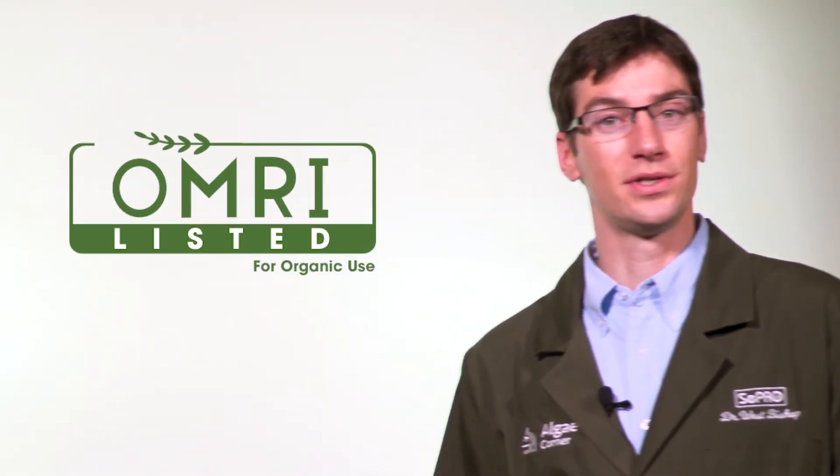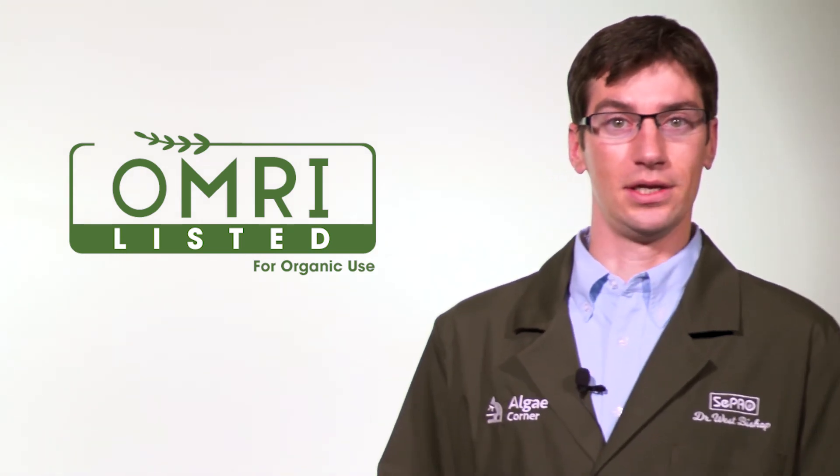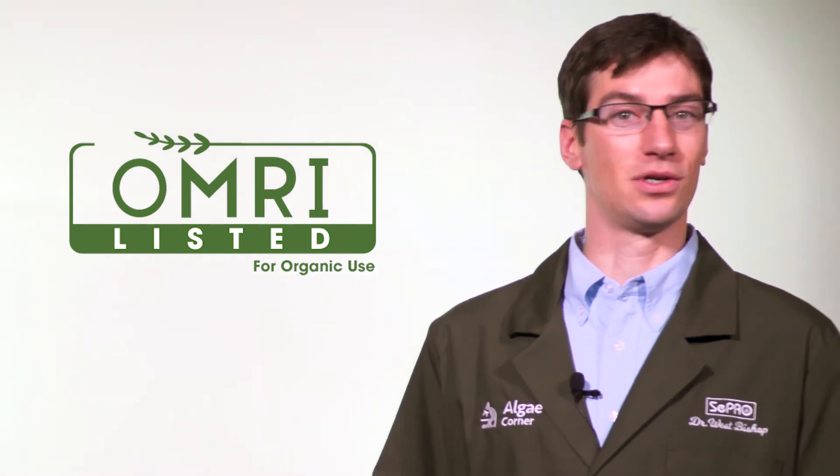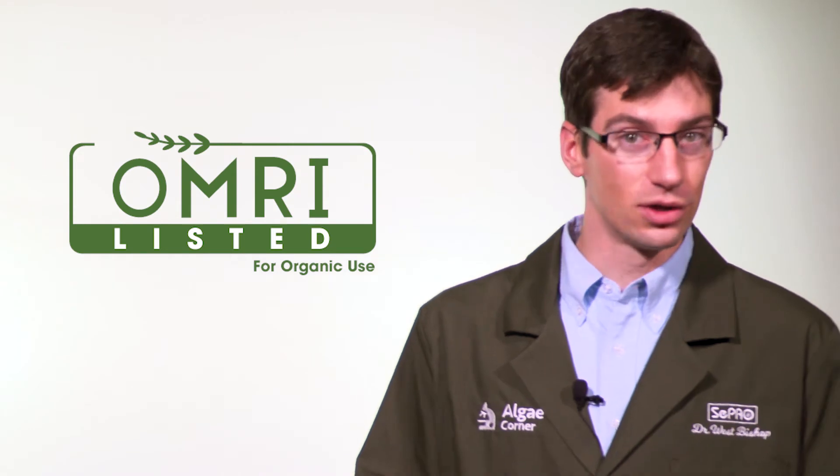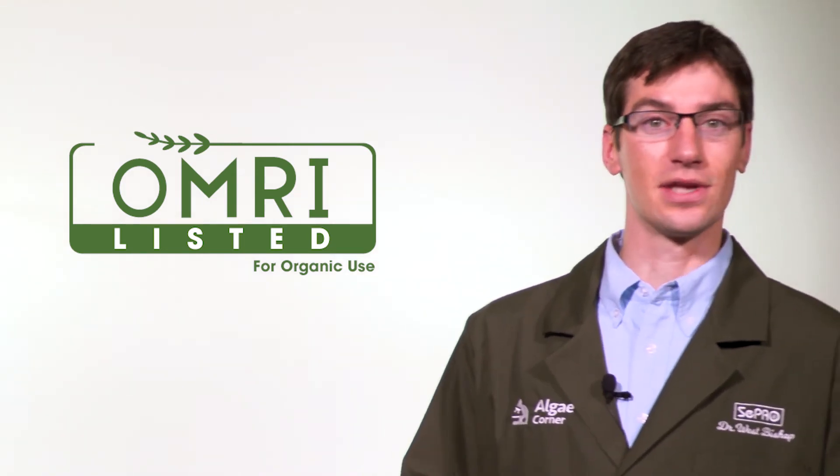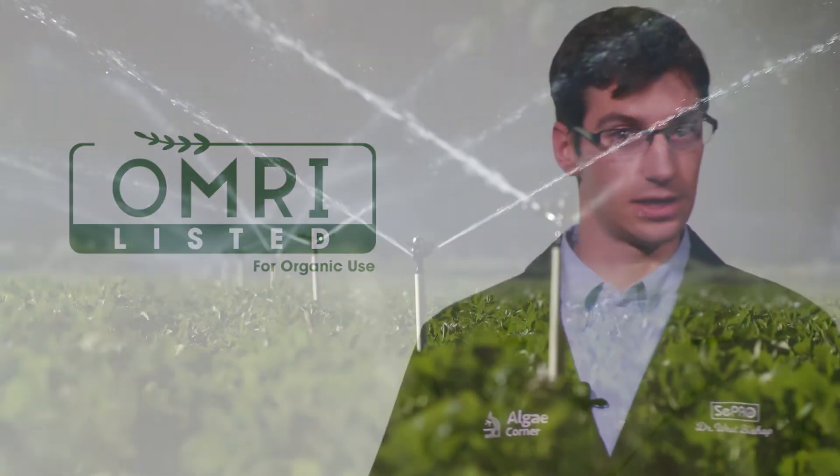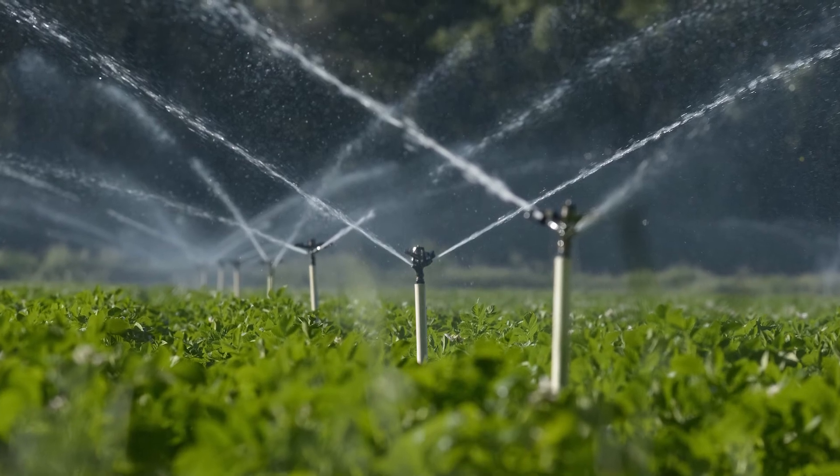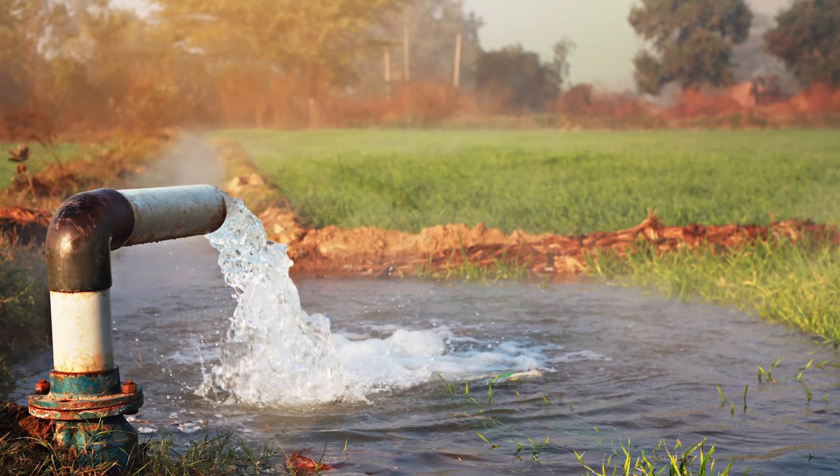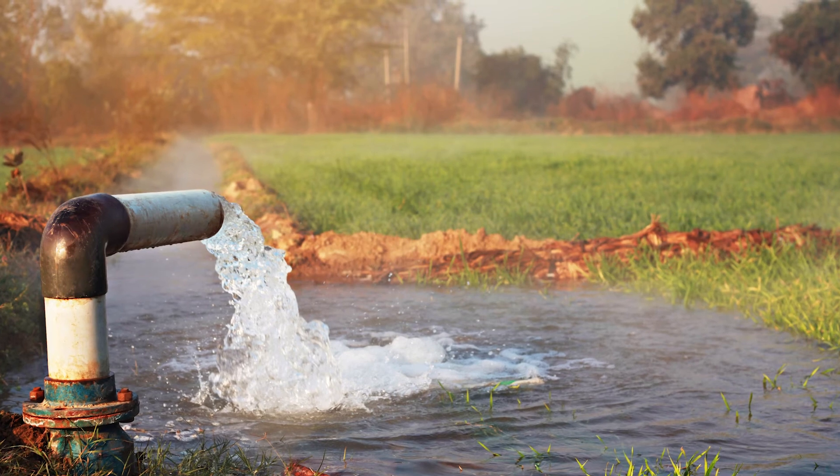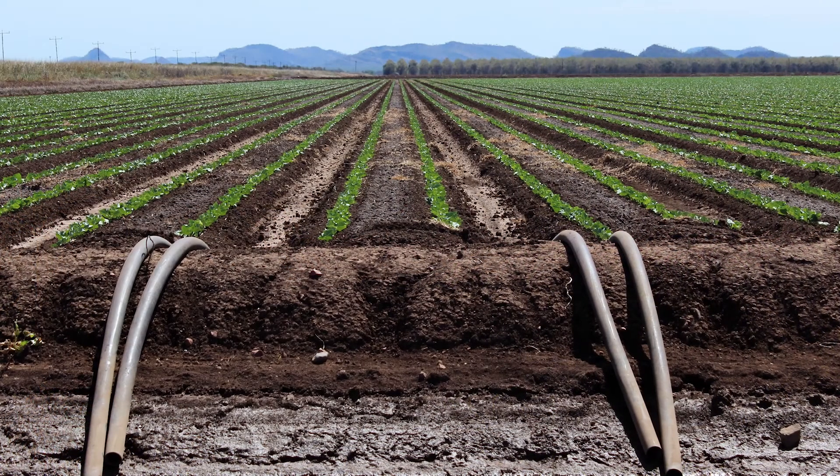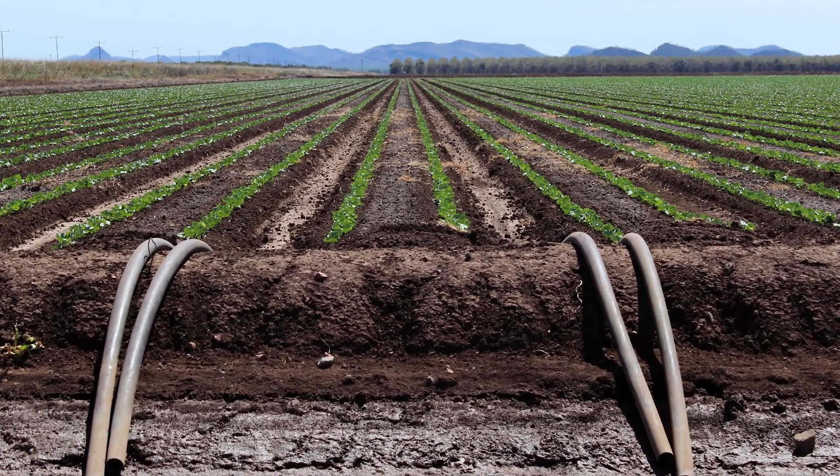Additionally, PAC27 is OMRI accredited. So this Organic Materials Review Institute looks at the product and says it's safe for use in irrigation such as for organic crops. So PAC27 can be used in these ponds or these irrigation systems destined for organic production of vegetables or fruits or even livestock.